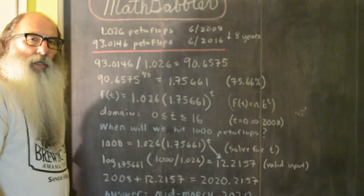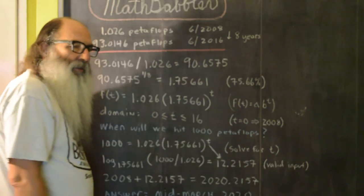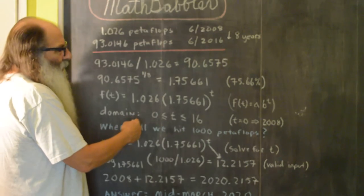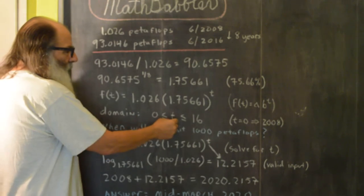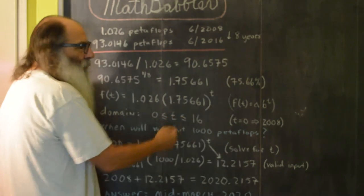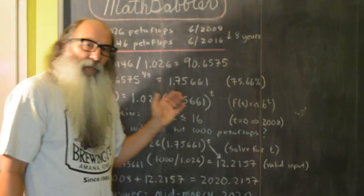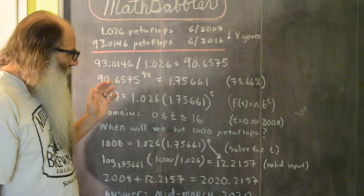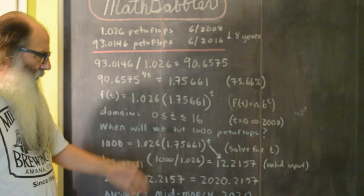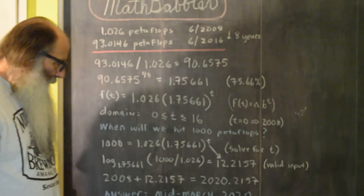We're going to assume that this growth factor will remain constant until 2024. So the domain for our function are t values that are greater than or equal to zero and less than or equal to 16. Where zero represents the year 2008, t of 1 is 2009, t of 2 is 2010, t of 16 would be 2024.